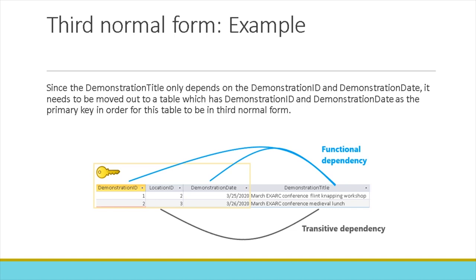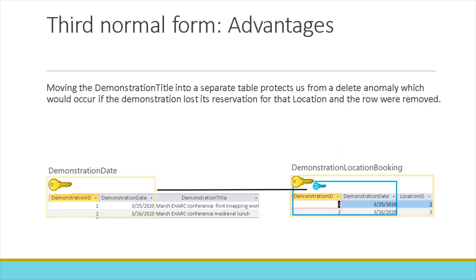Moving the demonstration title into a separate table protects us from a delete anomaly, which would occur if the demonstration lost its reservation for that location and the row were removed. In Boyce-Codd normal form, each row's values are dependent upon the key, the whole key, and nothing but the key.